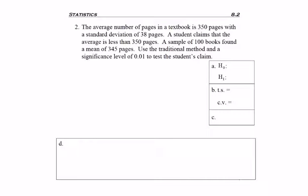So, as always, let's go ahead and read the problem all the way through before we start it. The average number of pages in a textbook is 350 pages with a standard deviation of 38 pages. A student claims that the average is less than 350 pages. A sample of 100 books found a mean of 345 pages. Use the traditional method and a significance level of 0.01 to test the student's claim.